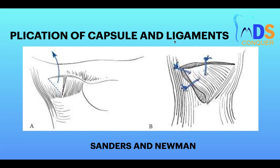Surgical treatment includes plication of the capsule and ligament. Plication addresses the lax, loose tissue — a portion of the loose tissue is excised and sutured back in place to increase the stiffness of the joint.